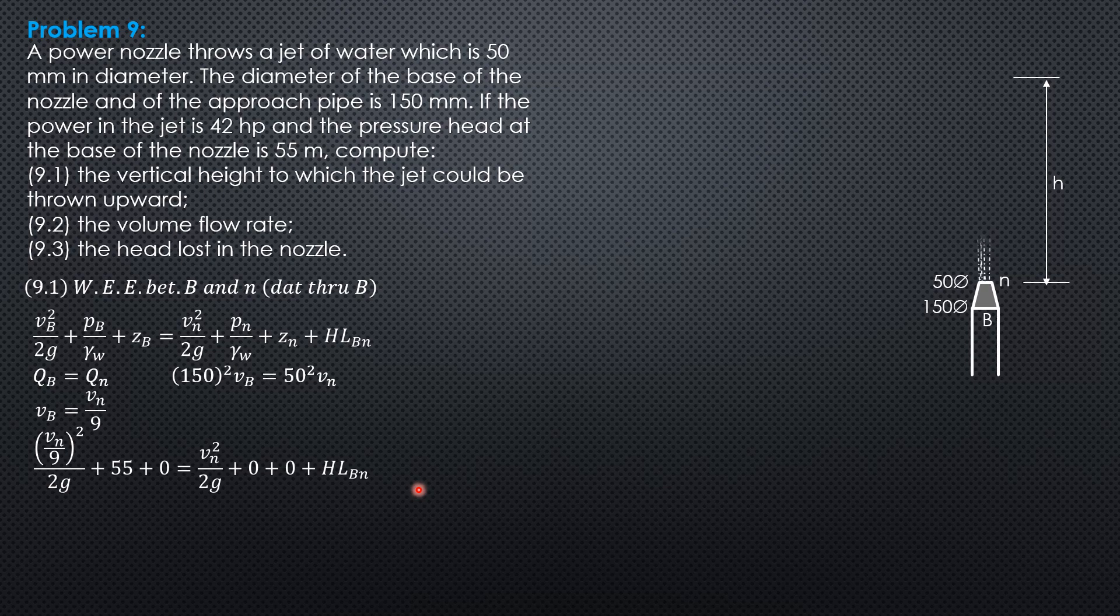So the head loss from b to n is equal to 55 minus 80 over 81 times vn squared over 2g velocity head in the nozzle.